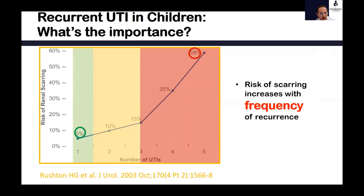What is the importance, and why are we discussing this topic? Why are pediatric recurrent urinary tract infections important? As you can see from this graph, as the number of urinary tract infections accumulates, there is an increased risk of renal scarring. If a kid has one urinary tract infection, they are at risk of around 5% of having renal scarring, and this risk increases with subsequent infections — the slope takes a more steep rise after the third infection. With 5 urinary tract infections, we expect around 60% of kids will have renal scarring.